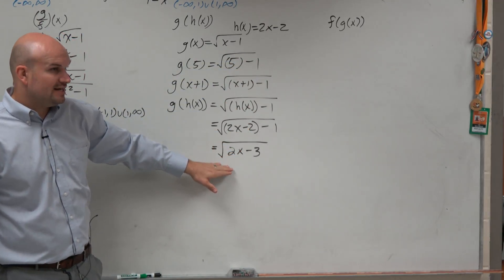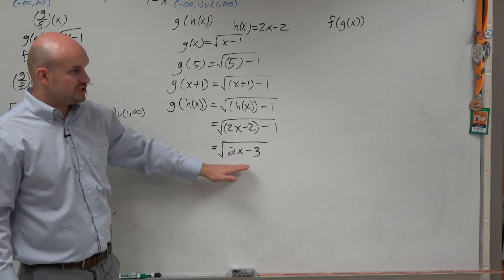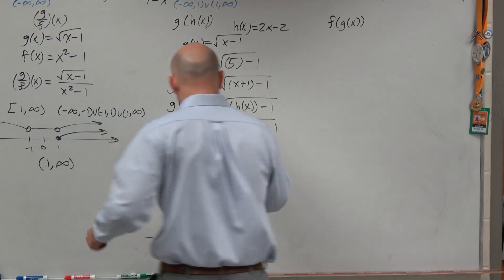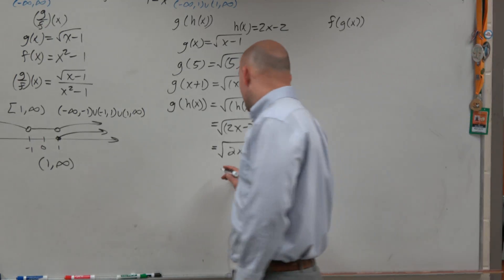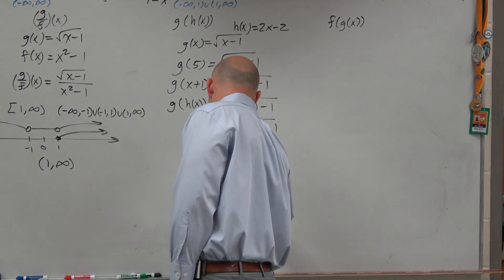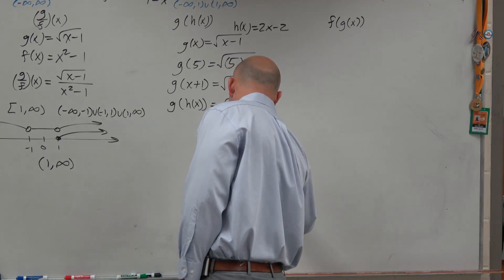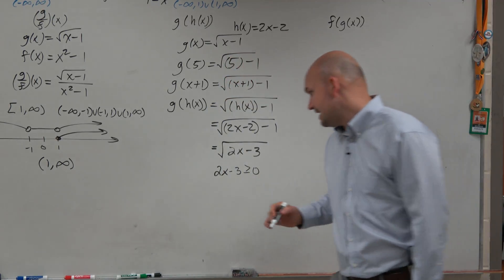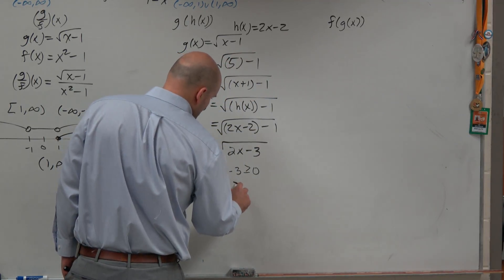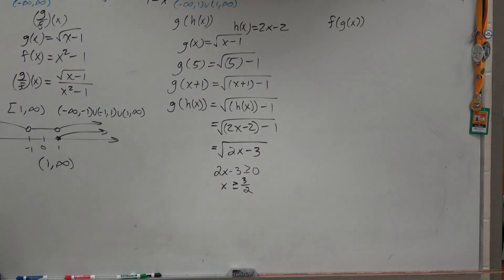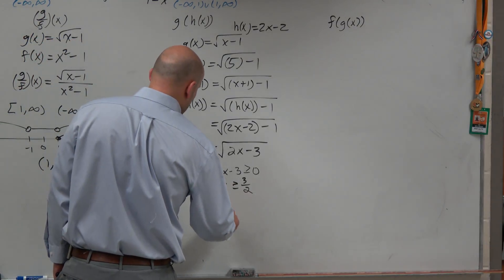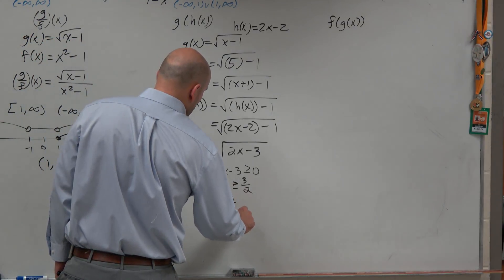And then once you've plugged it in, we've got to be able to find the domain restriction here. And based on what we know about finding the domain restriction for a radical, we know that here we're just going to take the radicand and set it greater than or equal to 0. And for the sake of time, I will solve that as x is greater than or equal to 3 halves. And then, ladies and gentlemen, we can just rewrite that as 3 halves to infinity.